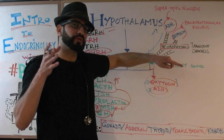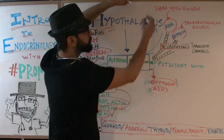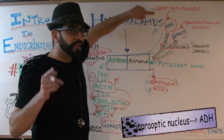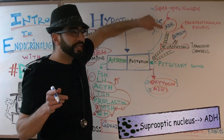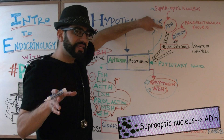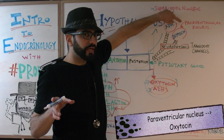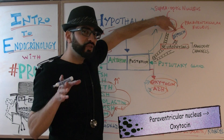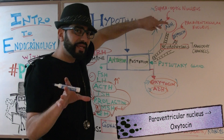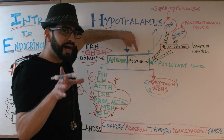There are two specific nuclei in the hypothalamus you need to know for your Step 1 exam. The supra optic nuclei produces ADH — antidiuretic hormone. The paraventricular nuclei produces oxytocin.